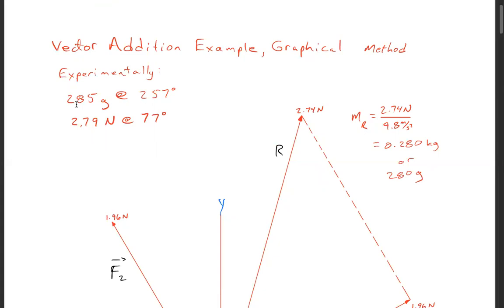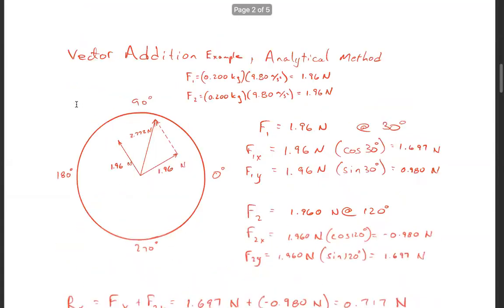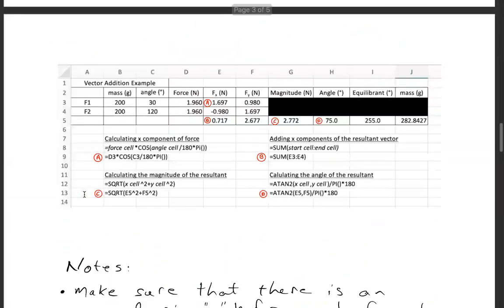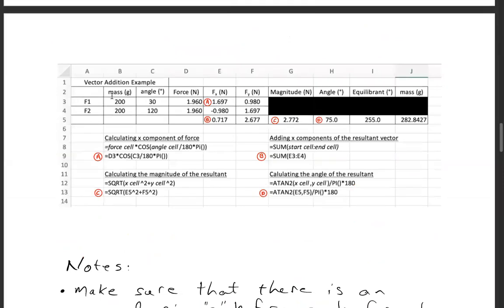Now let's do the same thing using Excel. I have F1, F2, this is the mass, this is the angle, this is the force. Just 9.8 times this, 9.8 times this gives you the force. Now let's break it into its components.